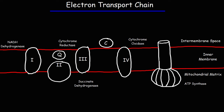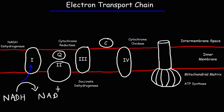Now let's move on to stage four of cellular respiration, the electron transport chain. The NADH molecule generated in the Krebs cycle, glycolysis, and pyruvate oxidation is going to give up a hydrogen and some electrons at complex one, which is called NADH dehydrogenase. As all dehydrogenase enzymes go, it catalyzes the removal of hydrogen from NADH. As a result, NADH will lose electrons — it gives up electrons to complex one.